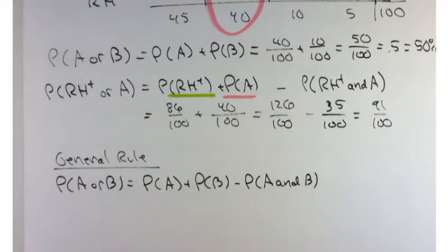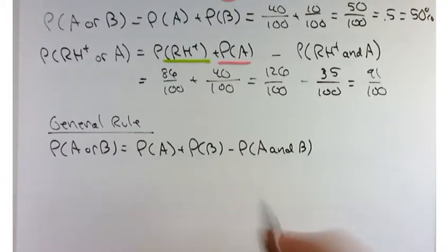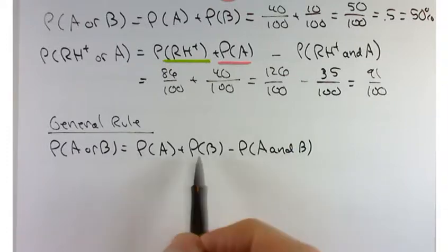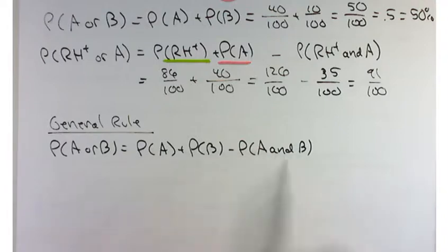Basically where they overlap. And what this is doing is it's subtracting off that piece where you double counted. So anywhere where they overlap, get counted twice, and you subtract off that piece.